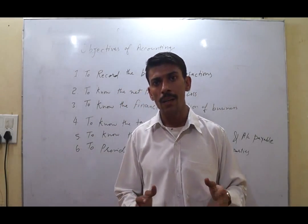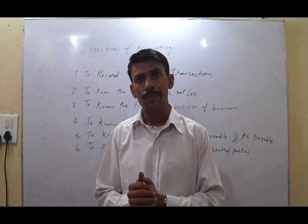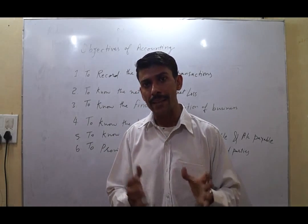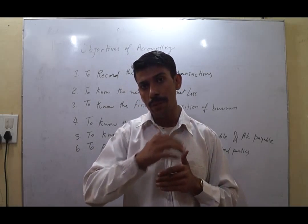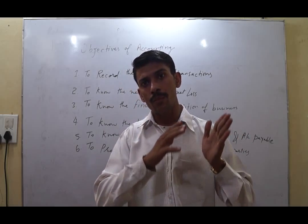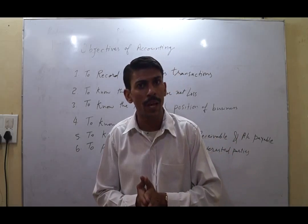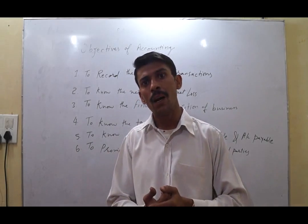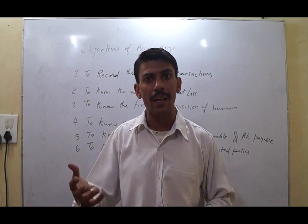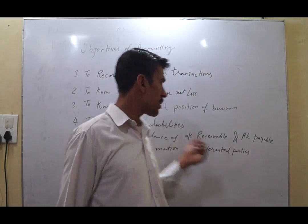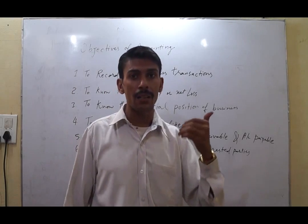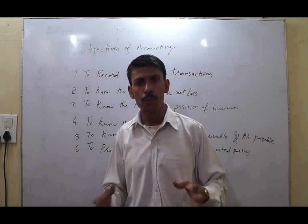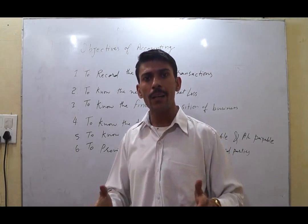The second objective is to know the net profit or net loss. Accounting makes records, and these records are used to calculate what is the value of our net profit or net loss achieved in our accounting period — which may be one month, quarterly, or one year — after calculating the total revenues and total expenses.